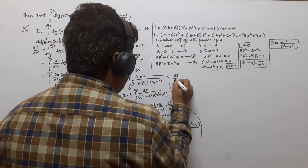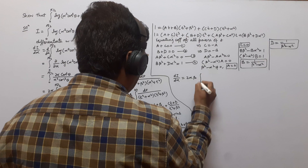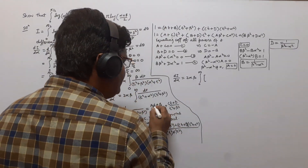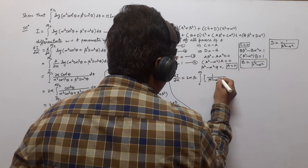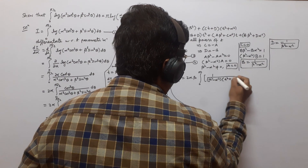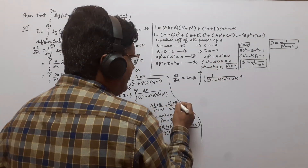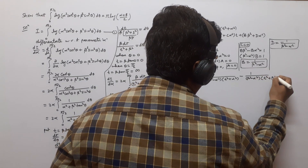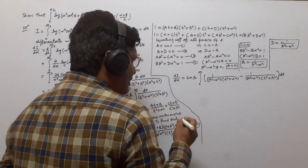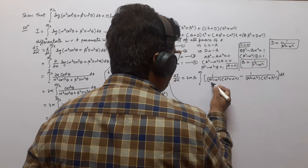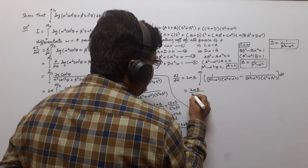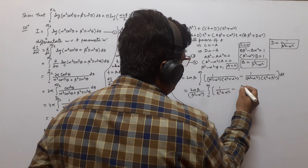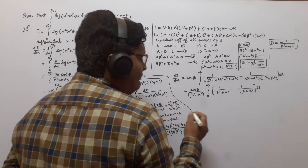Putting the values of A, B, C, D back into the partial fraction, dI/dα = 2αβ times the integral from 0 to ∞ of [1/(β² − α²)]·[1/(t² + α²) − 1/(t² + β²)] dt. Taking the common factor 1/(β² − α²) out: dI/dα = 2αβ/(β² − α²)·∫₀^∞ [1/(t² + α²) − 1/(t² + β²)] dt.